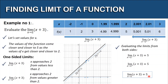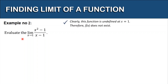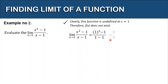Let's have our second example: evaluate the limit of (x squared minus 1) all over (x minus 1) as x approaches 1. In this example, it is clear that the function will be undefined if x is equal to 1, so the function does not exist at that point. Let's try direct substitution: we have 1 squared minus 1 all over 1 minus 1, which gives us 0 over 0 — this is undefined.